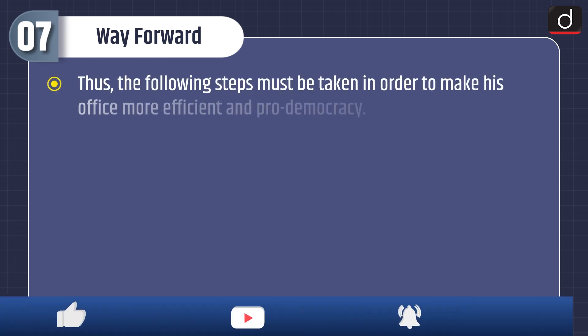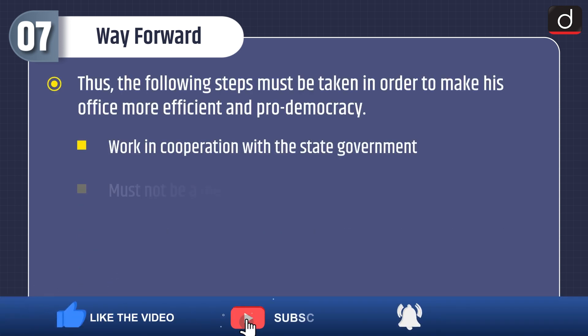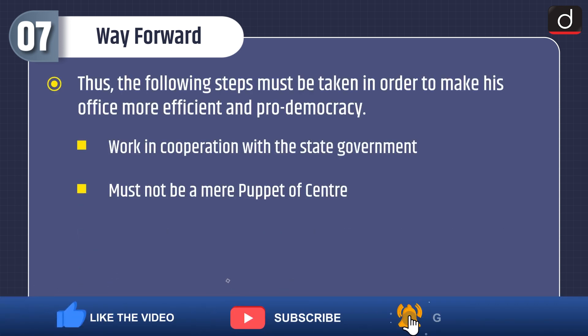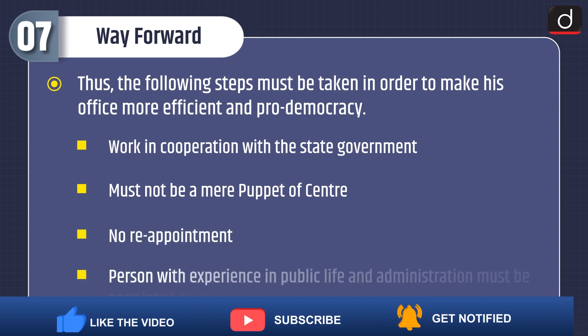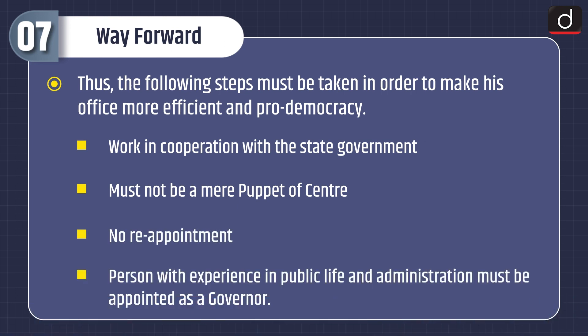Thus, the following steps must be taken to make the office more efficient and pro-democracy: work in cooperation with the state government and must not be a mere puppet of the centre; tenure must be fixed, ensuring security of tenure; no reappointment; and persons with experience in public life and administration must be appointed as governor.